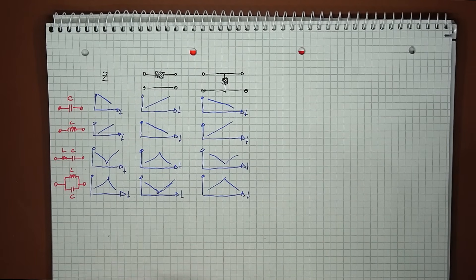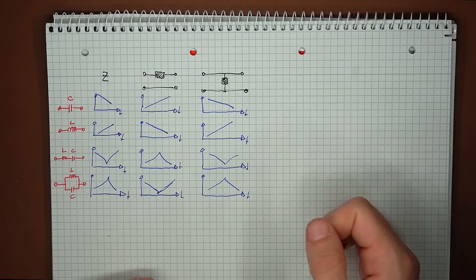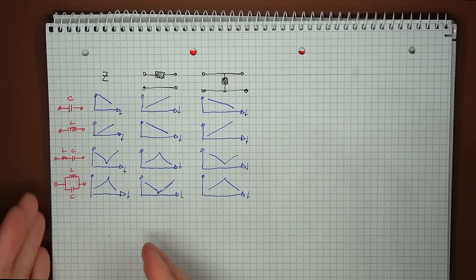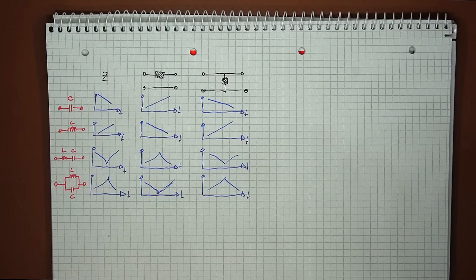You can build bandpass filters just with the standalone inductors and capacitors, but taking advantage of the series and parallel resonance, you can obtain much narrower responses. So these sort of arrangements are most common when building bandpass or bandstop filters.